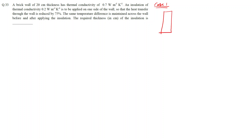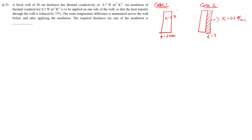For Case 1, we have the brick wall with thermal conductivity 0.7 and thickness 20 centimeters. For Case 2, this brick wall remains the same and we are adding an insulation with thermal conductivity 0.2. The temperature on one side is T1 and on the other side is T2. In Case 2, T1 is on the wall side and T2 is outside the insulation.